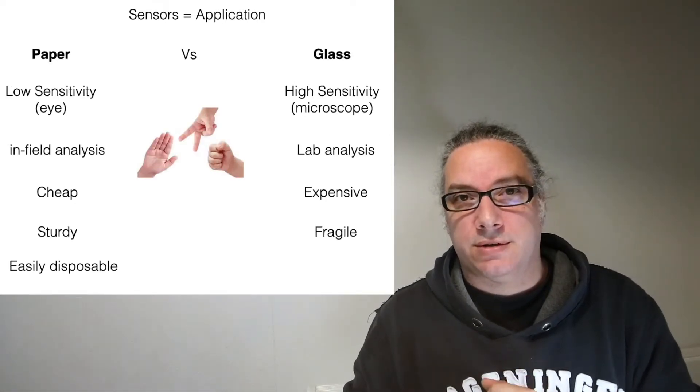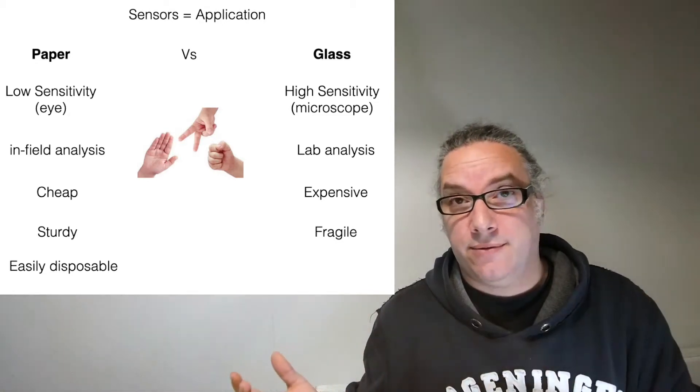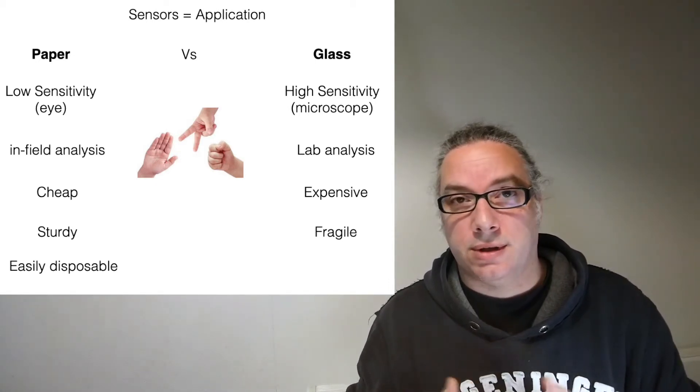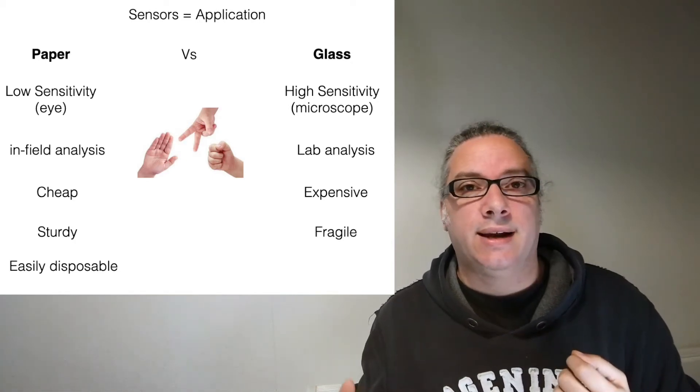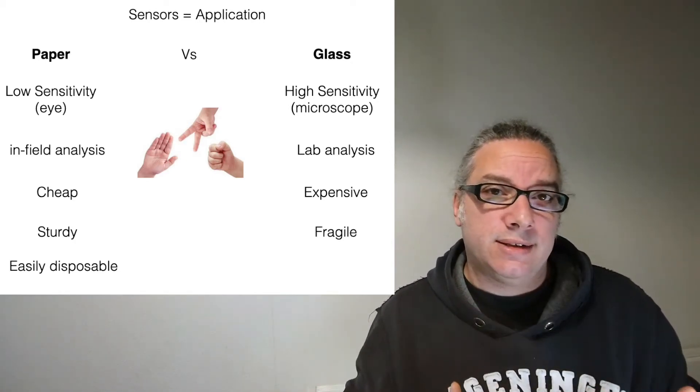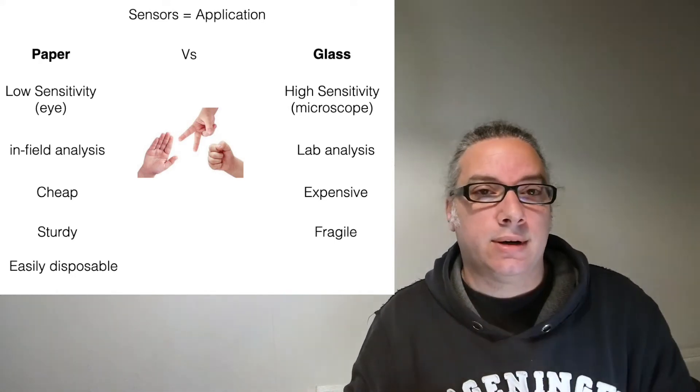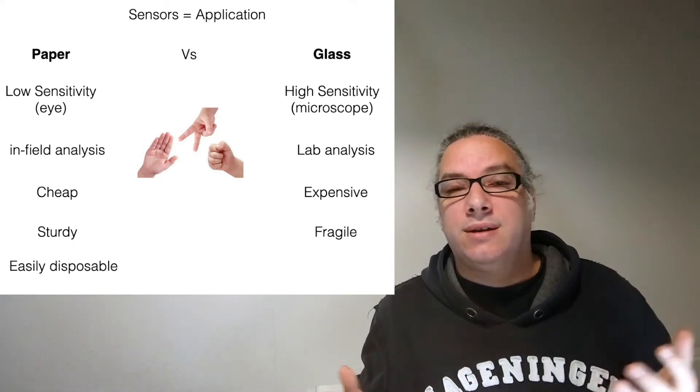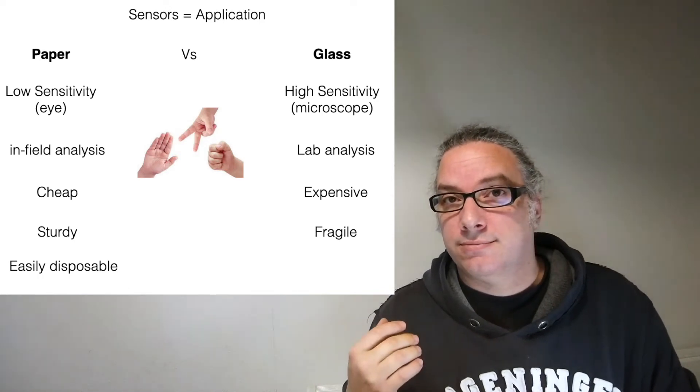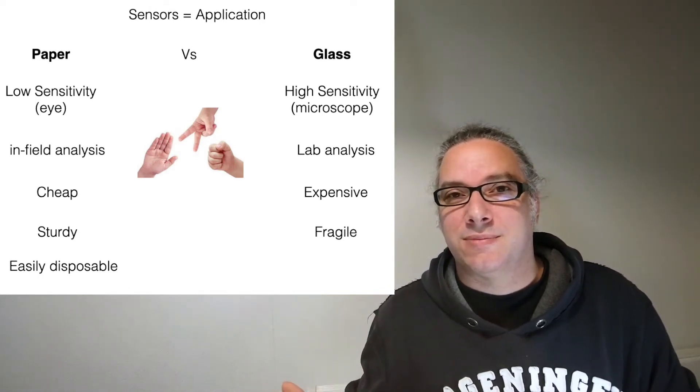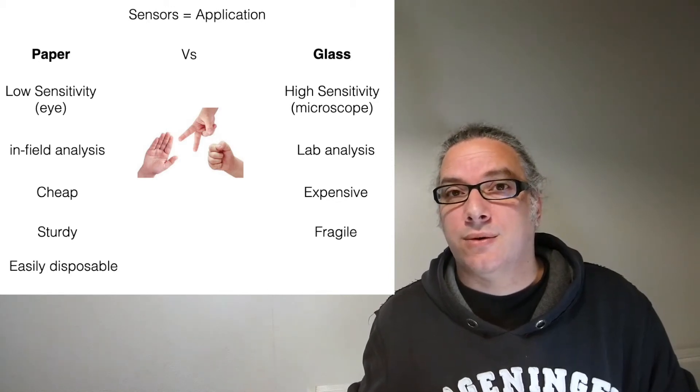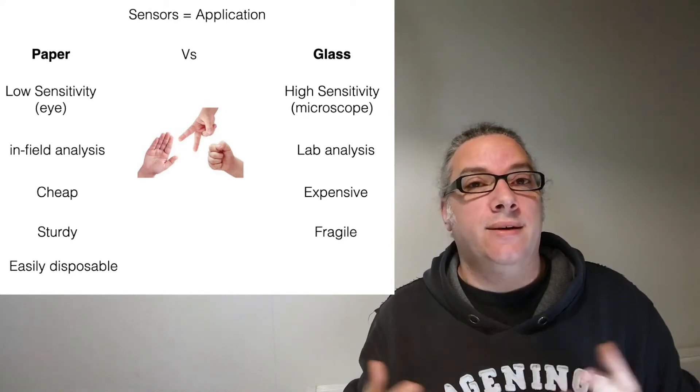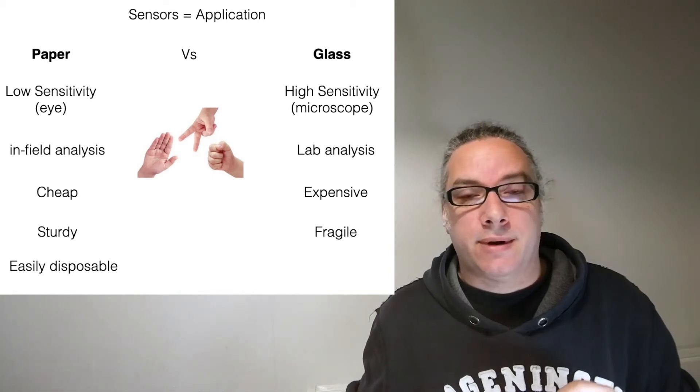Today we are going to see paper versus glass. Both have pros and cons. The paper for example is really cheap. You can produce it in tons without any problem. You can detect the analyte by eye. You can do in-field analysis because you can bring it everywhere. You can ship it everywhere. It's sturdy. So hypothetically you can throw it from an airplane and the sensor will be still okay. That's not a problem. And it's easily disposable because naturally you can burn it. So once you finish the experiment you burn it. And this is especially important for biological applications. So if you are testing blood for example you don't want to contaminate anything else. Then after the experiment you just burn the paper and that's it.